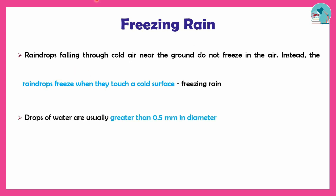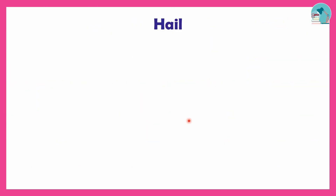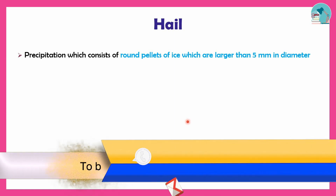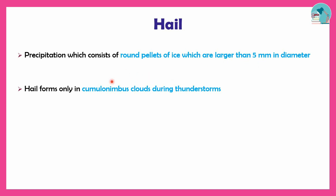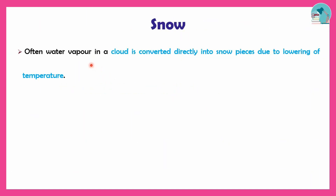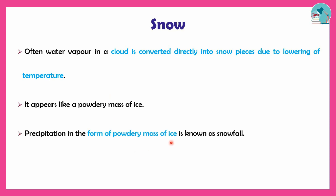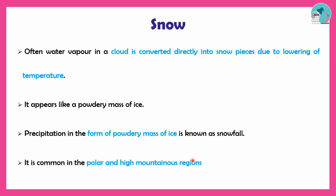Freezing rain involves water drops greater than 0.5 mm. Next is hail — rounded snow-like particles. Snow is a little different. Hail forms in nimbus thunderstorm clouds, and its diameter is greater than 5 mm. Next is snow — snow is water vapor that forms into powdery ice. Snowfall is common in polar and higher mountainous regions.